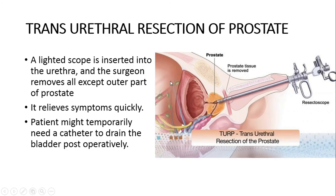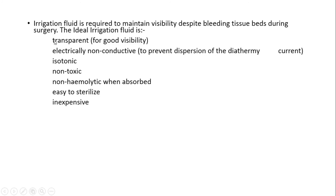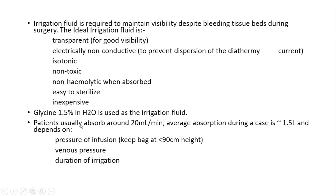In TURP, we need irrigation fluid. This irrigation fluid ideally should be transparent for good visibility, electrically non-conductive, isotonic, non-toxic, non-hemolytic when absorbed, easy to sterilize, and inexpensive. However, such ideal irrigation fluid is not available. The best available irrigation fluid in our clinical setting is glycine 1.5% in water. Patients usually absorb around 20 ml per minute, with average absorption during a case being approximately 1.5 liters. This absorption of irrigation fluid intraoperatively depends upon the pressure of infusion, venous pressure, and duration of irrigation.